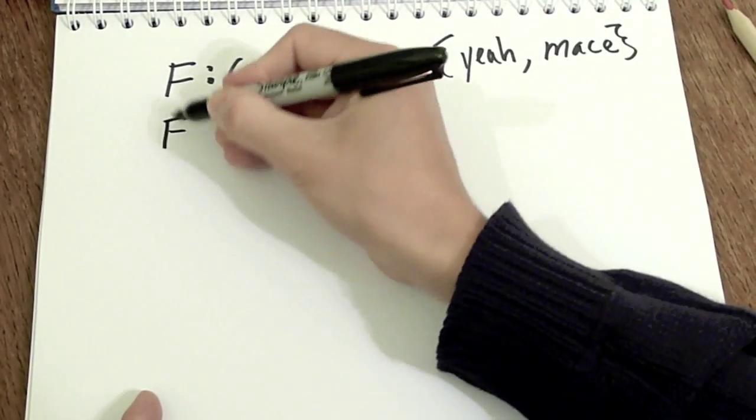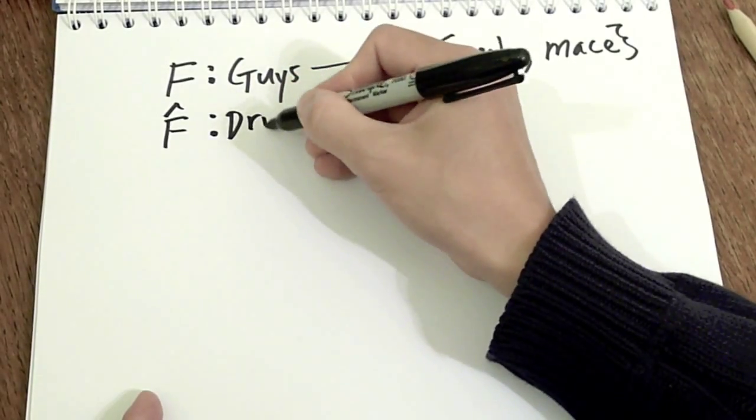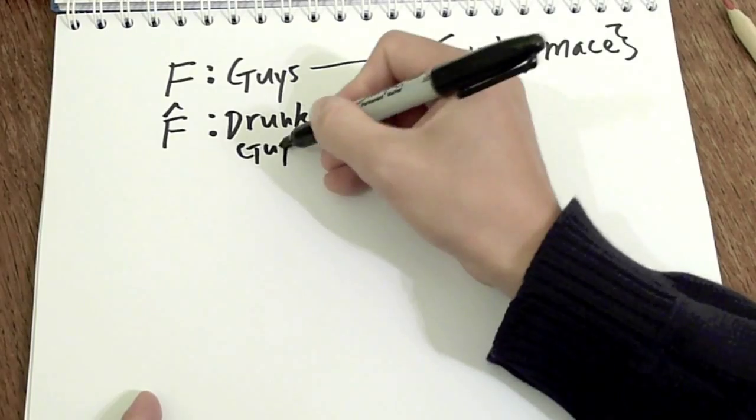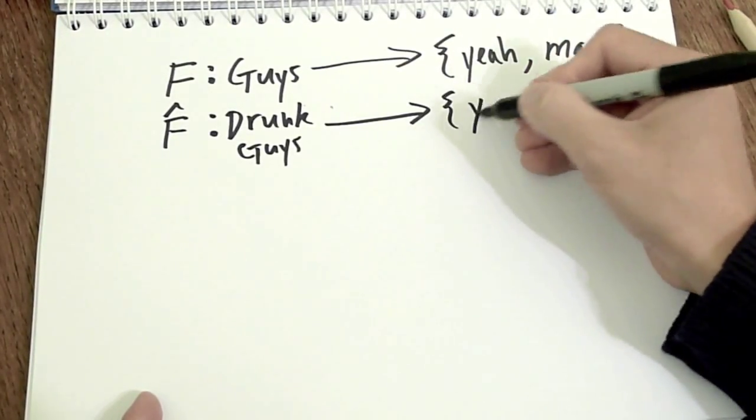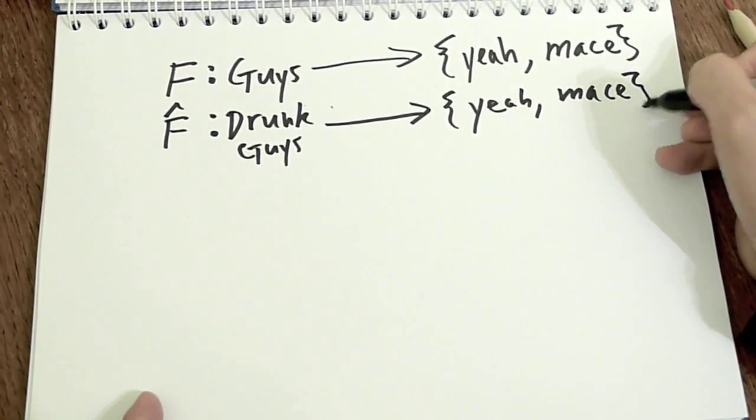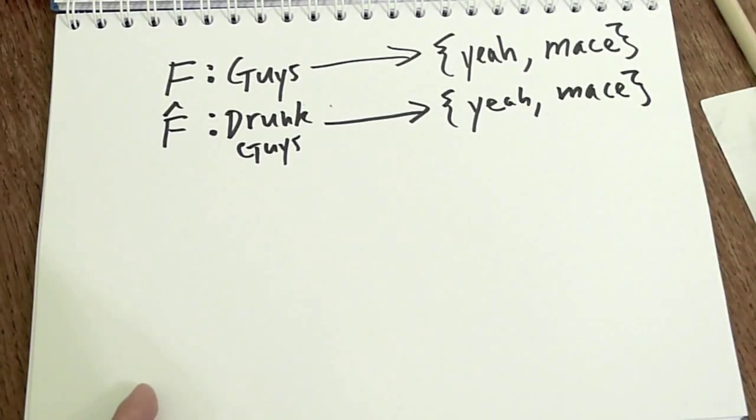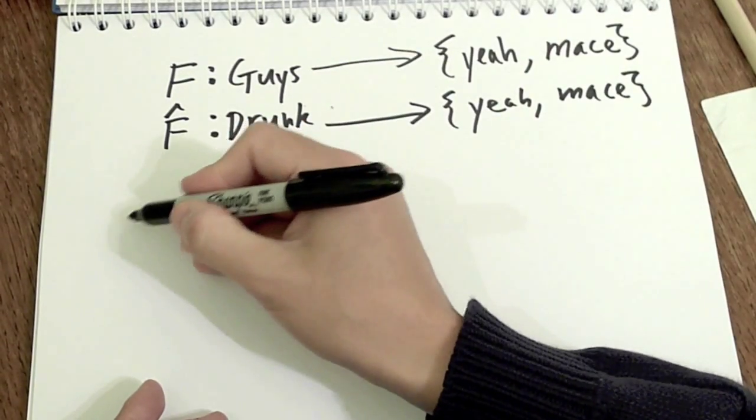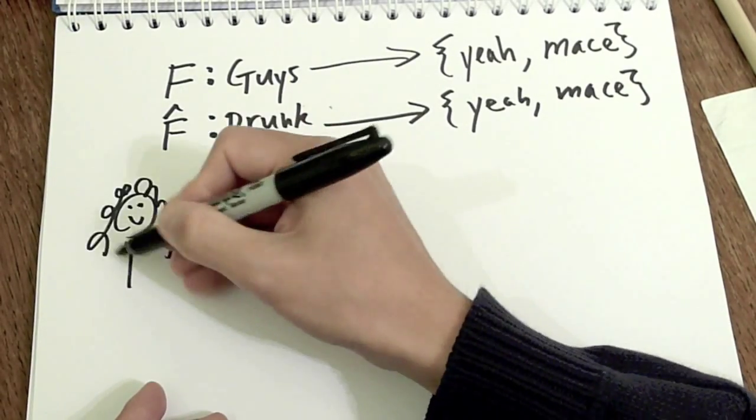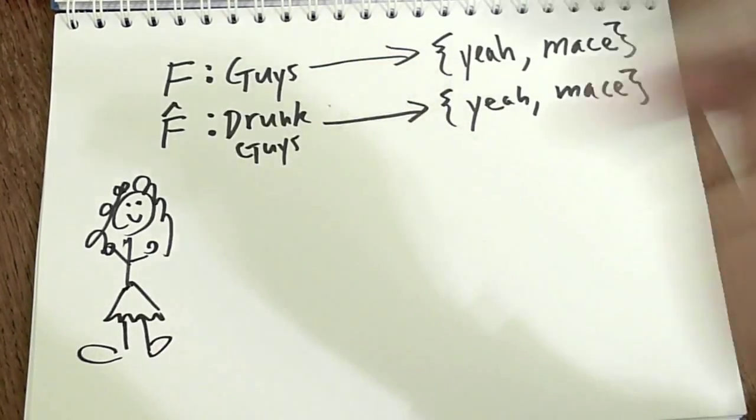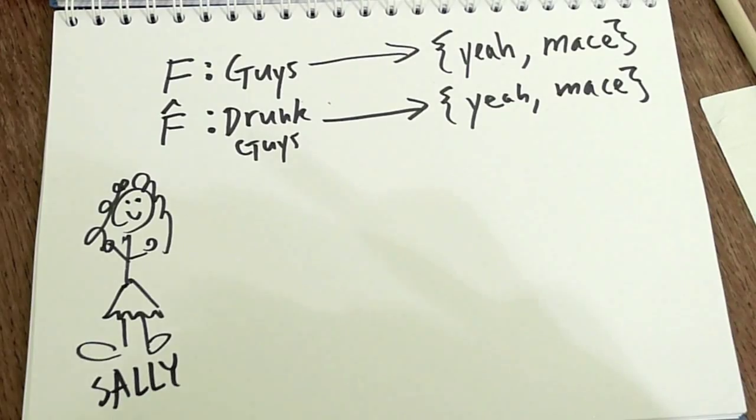There'll be another map called F-hat, which is awfully the same, except for it acts on drunk guys. And it will have the same set of reactions. M-A-C-E-MACE. And what is the map? The map is as follows. Say, there's this girl, okay? I'll call her Sally. I don't know why. And you can say something to Sally.